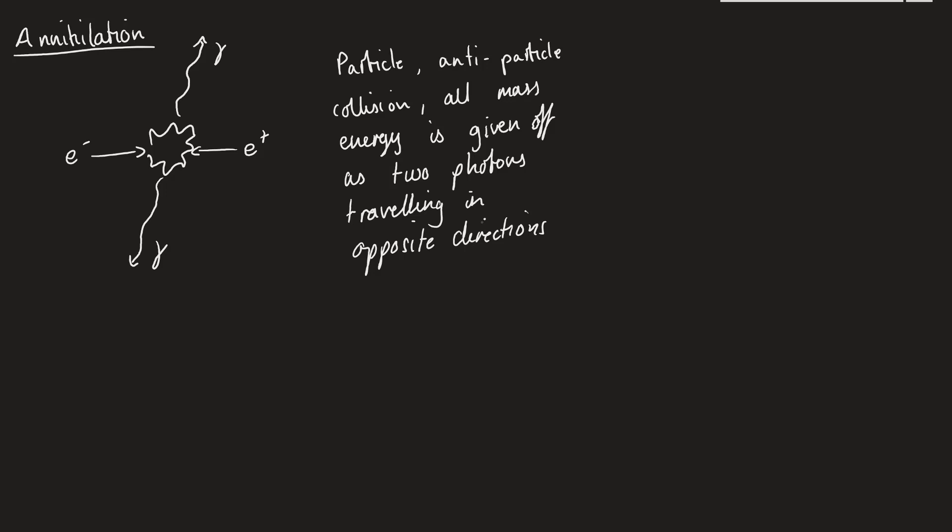You might say, why do they have to travel in opposite directions? And they do this to conserve momentum. Because even though we're not conserving mass, we are still conserving energy. So when people say the mass has to stay the same in all things, we can get mass turning to energy, we can get energy turning to mass. But even if we have a photon that doesn't have mass, because it's moving, it will still have momentum. This is a quantum mechanics idea that we're going to look at in a few videos' time.